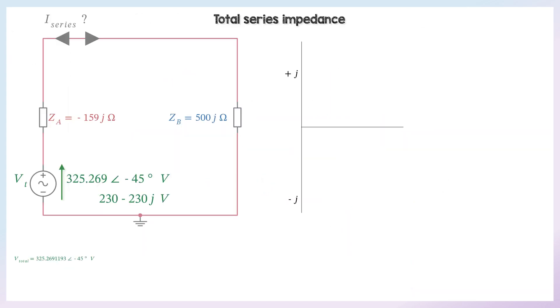Now for the total series impedance, because there's no load there, we just add the two impedances together, which gives us positive 341 J ohms. So that, because it's a positive J, that is inductive.